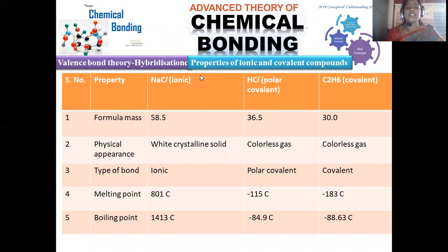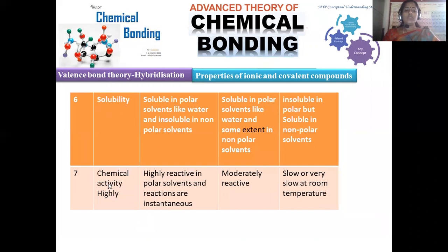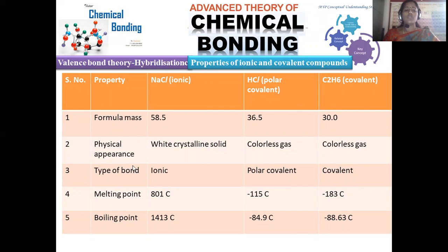This session is a continuation of valence bond theory, focusing on the properties of ionic versus covalent compounds. We will compare sodium chloride, which is purely ionic, hydrochloric acid, which is a polar covalent compound, and ethane. Parameters such as formula mass, physical appearance, type of bond, melting point, boiling point, solubility, and chemical activity will be compared for these three reference compounds.